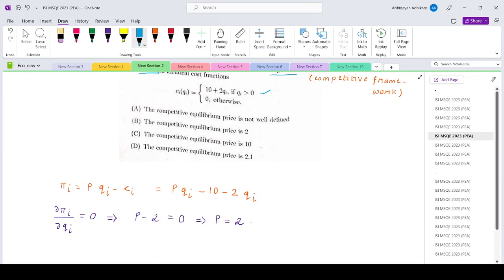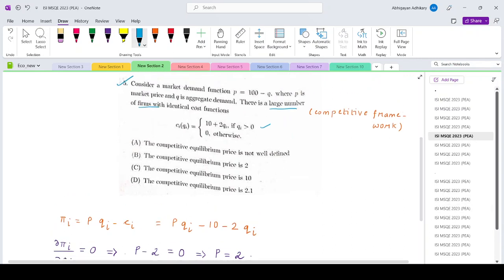Now note something: in the question it is mentioned that there are large number of forms, and that basically indicates a comparative framework. And in the comparative framework we have that forms are price takers.